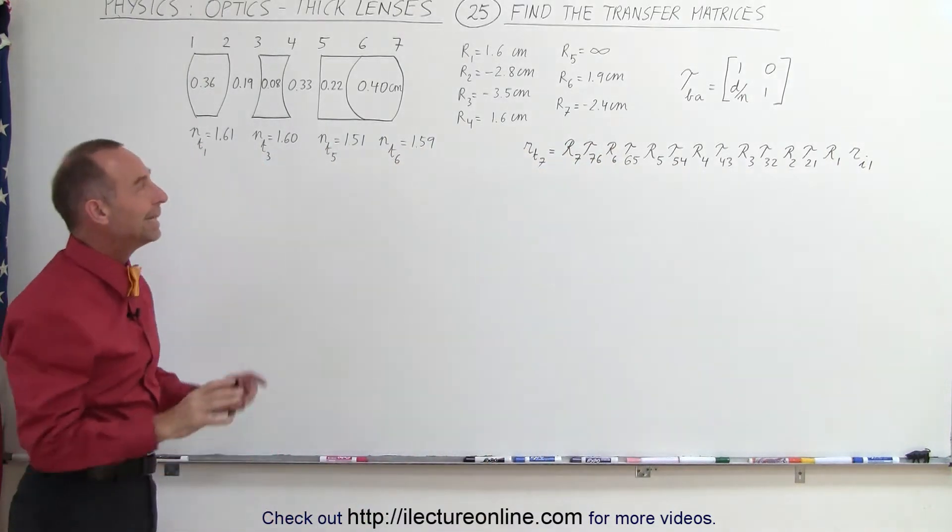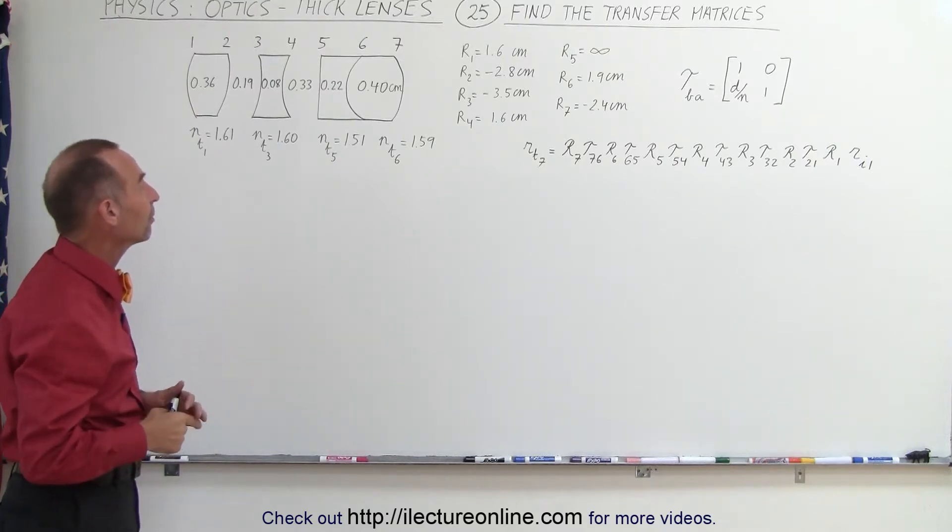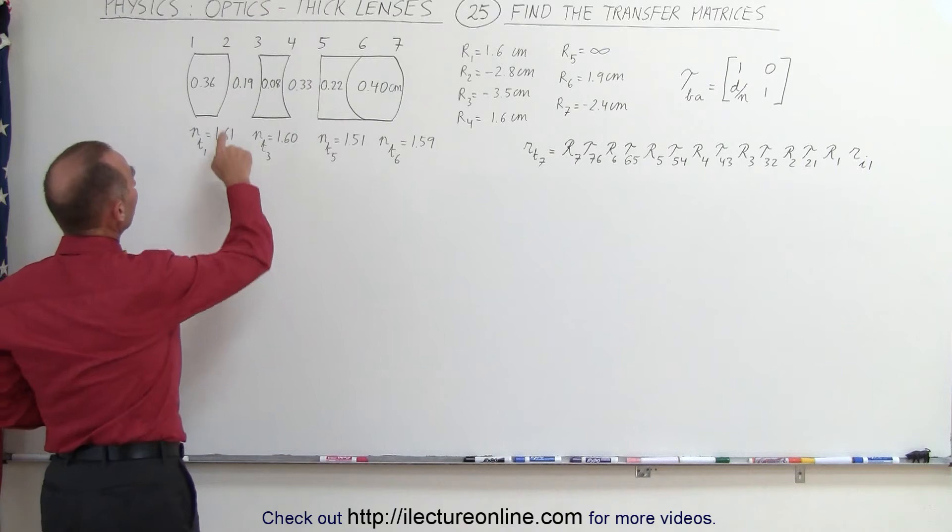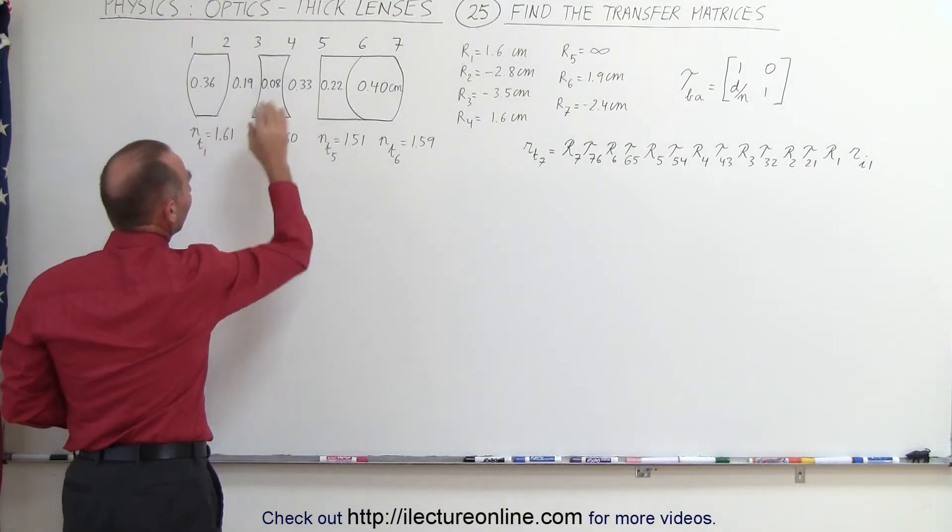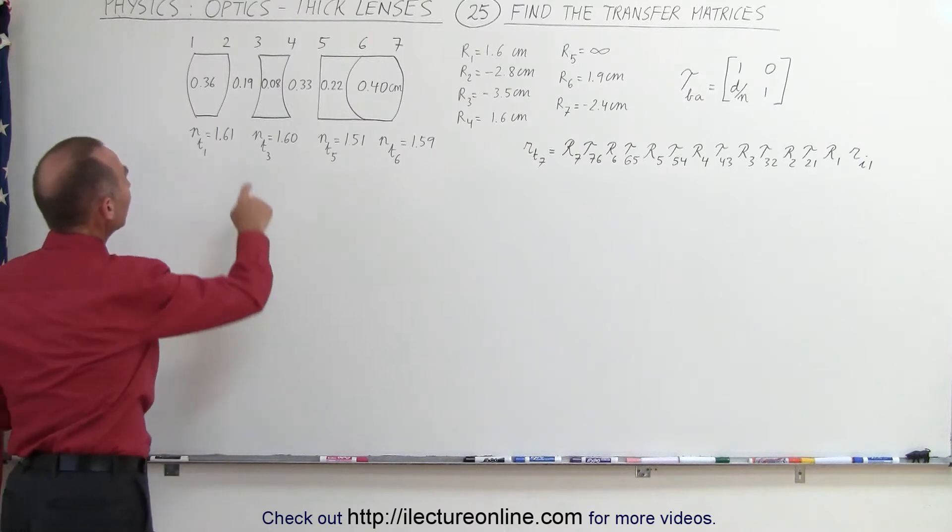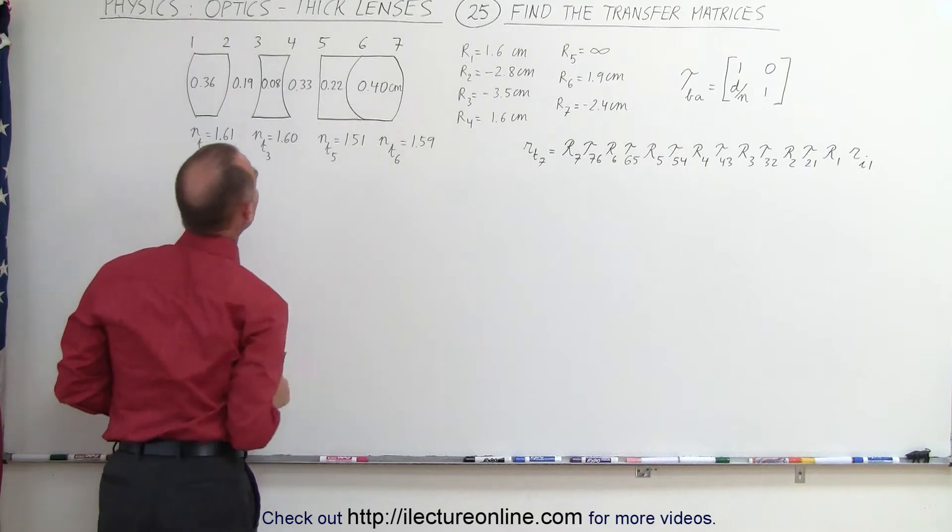What we're going to do in this video is simply come up with the transform matrices across all the boundaries. Notice there's four lenses, 1, 2, 3, 4, and there's two air gaps. We also have to account for the air gaps. These numbers here represent the thicknesses of the four lenses and the two air gaps in centimeters.